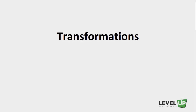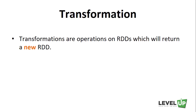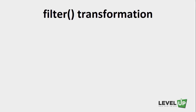As discussed in previous lectures, RDD supports two types of operations — transformations and actions. In this lecture, we'll talk about transformations. Transformations are operations on RDDs which return a new RDD. Keep in mind that transformations return a new RDD instead of mutating the existing input RDD. The two most common transformations are filter and map.